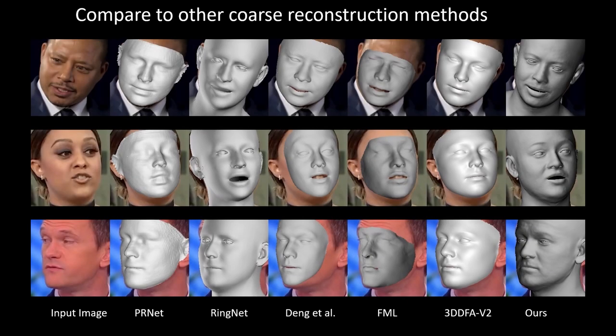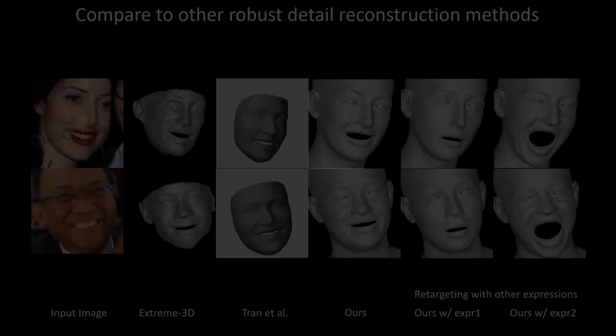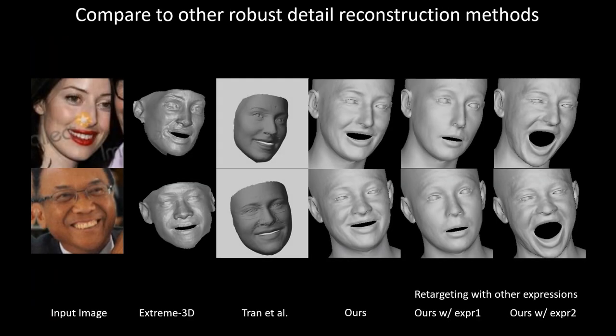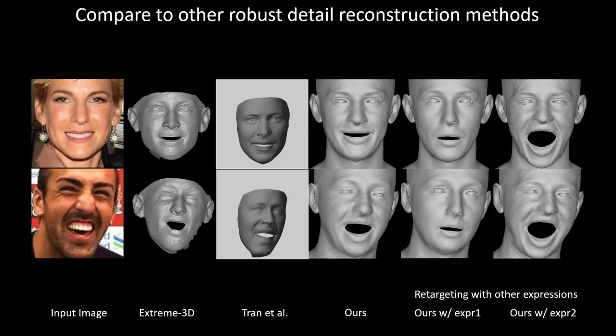Other methods reconstruct good details for some high quality images, however they often fail in images with occlusions and extreme poses. Some methods also get complete details with robust shape recovery, but the results cannot be animated. DECA is robust to a wide range of in-the-wild variations.